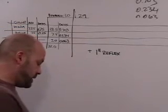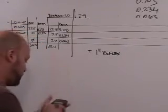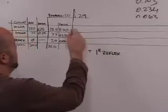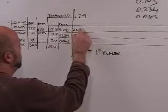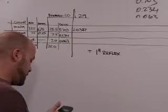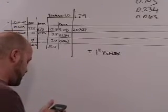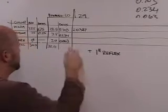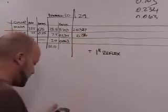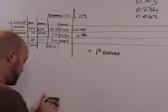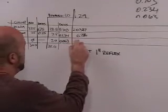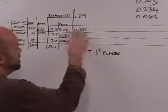29 times 0.703 equals 20.387. 29 times 0.234 equals 6.786, and 29 times 0.063 equals 1.827. And now just to check,